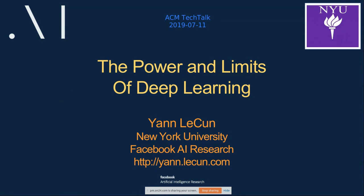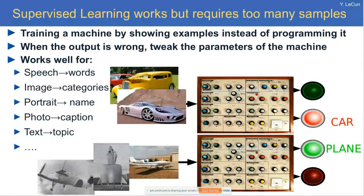Deep learning today, or AI today, is almost entirely based on supervised learning. Supervised learning is the idea of training a machine by showing it examples — for instance, training a machine to distinguish images of cars from airplanes. You show it a car; if it says car you do nothing, if it doesn't, you adjust the internal parameters. With a sophisticated enough model and enough training samples, the system will abstract the notion of car or airplane and recognize most of them.